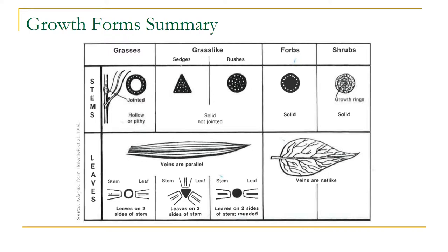Here's a diagram describing the differences between those growth forms. Grasses have hollow, jointed stems with leaves on two sides of the stem. Grass-like plants have solid stems, often triangular, with parallel veins and leaves that can be on two or three sides of the stem. Forbs and shrubs both have solid stems with net-like veins, but forbs are herbaceous and lack annual growth rings, whereas shrubs add growth rings each year as they become woody.